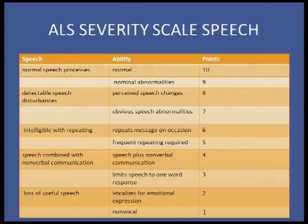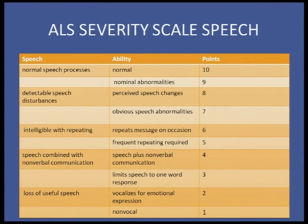The ALS severity scale for speech goes from normal speech processes, to nominal abnormalities, detectable speech disturbances, perceived speech changes, obvious speech abnormalities, intelligible with repeating on occasion, frequent repeating required, speech combined with nonverbal communication, speech plus nonverbal with one-word responses, and all the way down to loss of useful speech — vocalizing for emotional expression versus completely non-vocal.